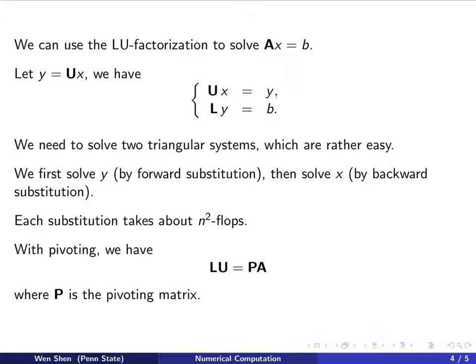Now if in the Gaussian elimination, pivoting was needed, then we can have L times U equals P times A, where this P is the pivoting matrix. So what it says is that the product here, P times A, will result in a matrix that would have a unique LU factorization.